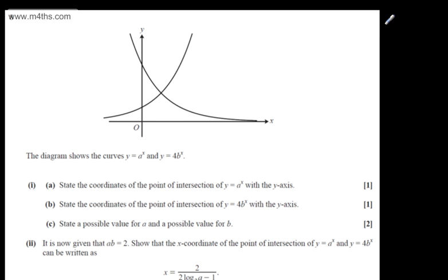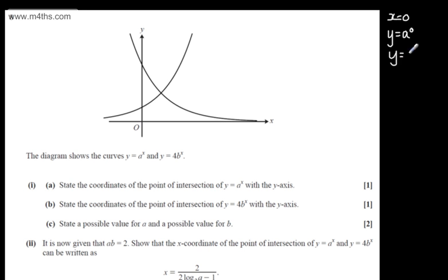If it's going to cross the y axis, x will be equal to 0, so y will be equal to a to the power of 0. Anything to the power of 0 is 1, so the y coordinate will be 1. So we have the point which we should just be able to write down as (0, 1).